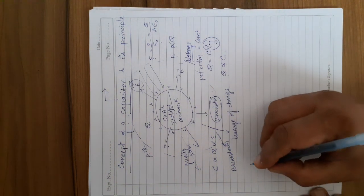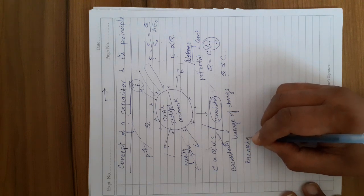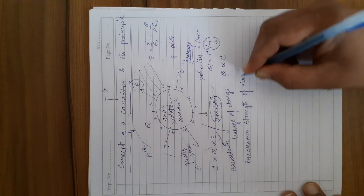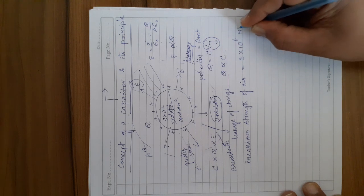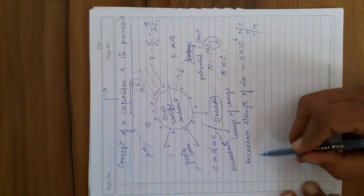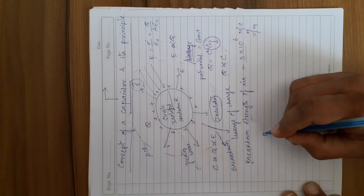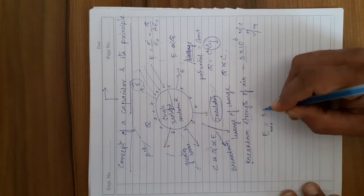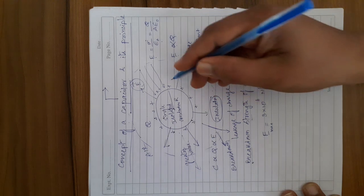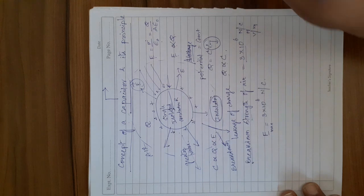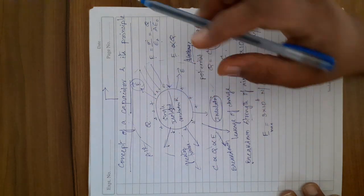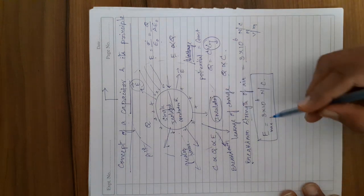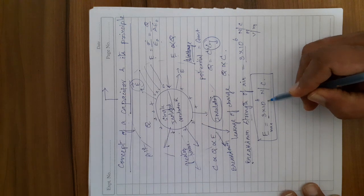The numerical value of the breakdown field strength, or breakdown strength of air, is 3 into 10 to the power 6 Newton per Coulomb, or volt per meter. Without ionization or breakdown occurring, you can give a maximum electric field of 3×10⁶ N/C to any isolated conductor. Beyond that, it is not possible to keep the charge on the surface of the conductor.